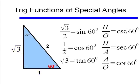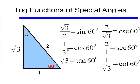The other three functions are handled the same way. The cosecant of 60 degrees is the hypotenuse over the opposite, or 2 over square root of 3. The secant of 60 degrees is the hypotenuse over the adjacent leg, or 2 over 1. And the cotangent of 60 degrees is the adjacent over the opposite, or 1 over square root of 3.